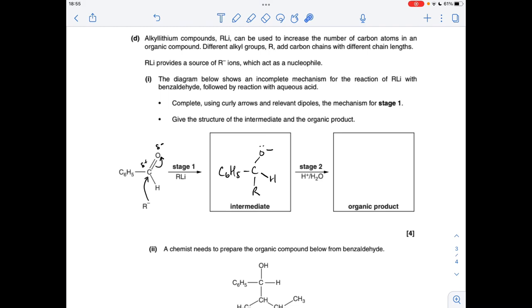The upshot of that is to generate this intermediate. Then we've got a mixture of acid and H2O, so that's obviously going to turn this part into an OH group. So the organic product looks like that.